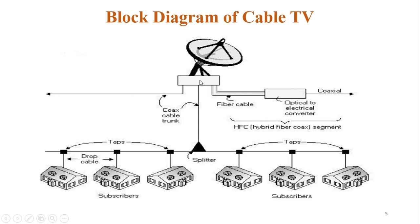The signal is transmitted through the coaxial cable, then it is split into two parts. Through taps, the signal goes to the homes — that is, to the subscribers. One part travels through coaxial cable, while another part goes through fiber cable, where an optical-to-electrical converter changes the optical signal into an electrical signal, which then travels through the coaxial cable. This is the Hybrid Fiber Coaxial (HFC) segment.